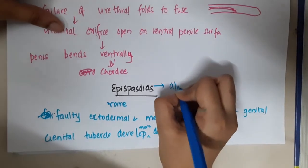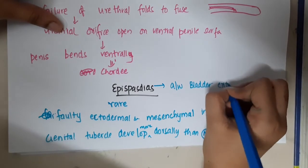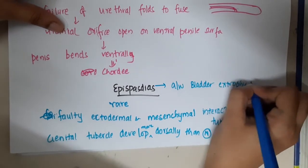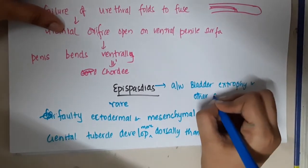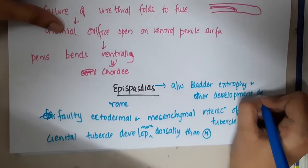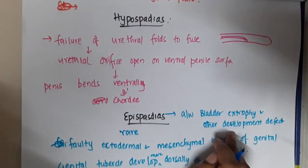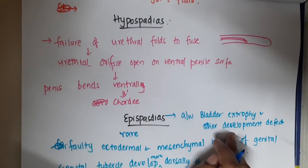Epispadias is associated with disorders like bladder exstrophy and other developmental defects. Epispadias is a more severe form than hypospadias because it is associated with developmental defects.